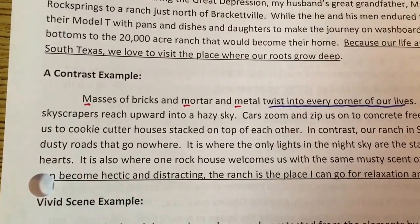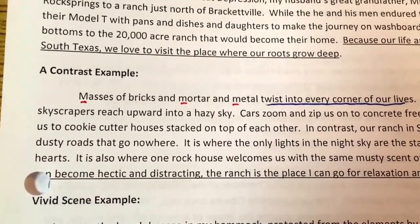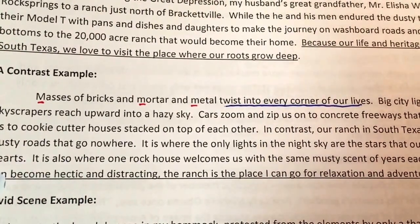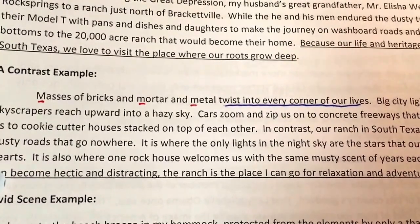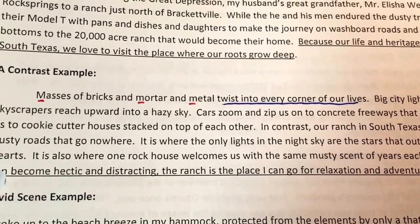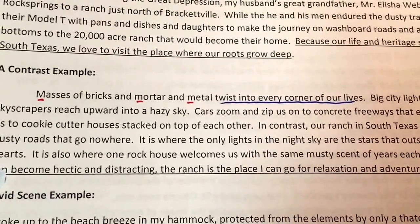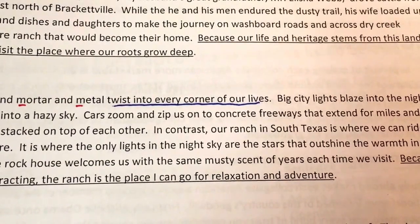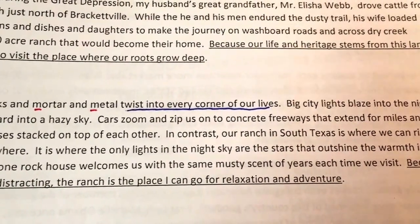What you probably need to do is just take account of what you've already done naturally, because sometimes we use metaphors naturally or anaphora naturally. Now that we've heard it and sensed it, you might have already incorporated it into your paper. Here's an example from my introduction: 'Masses of bricks and mortar and metal twist into every corner of our lives.' Just that sentence alone has alliteration — masses, mortar, metal — so I can check off alliteration from my list. And 'twist into every corner of our lives' is a metaphor, so I can make a check on the list for that one as well.